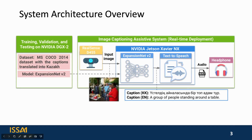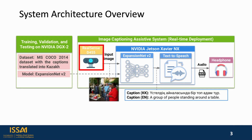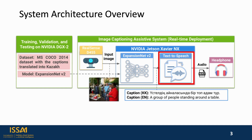The core of the system is an open-source image captioning model that processes an image coming from the camera. The model generates a natural text description of that image and passes the output to a local text-to-speech system. Finally, the generated speech is transmitted to headphones.